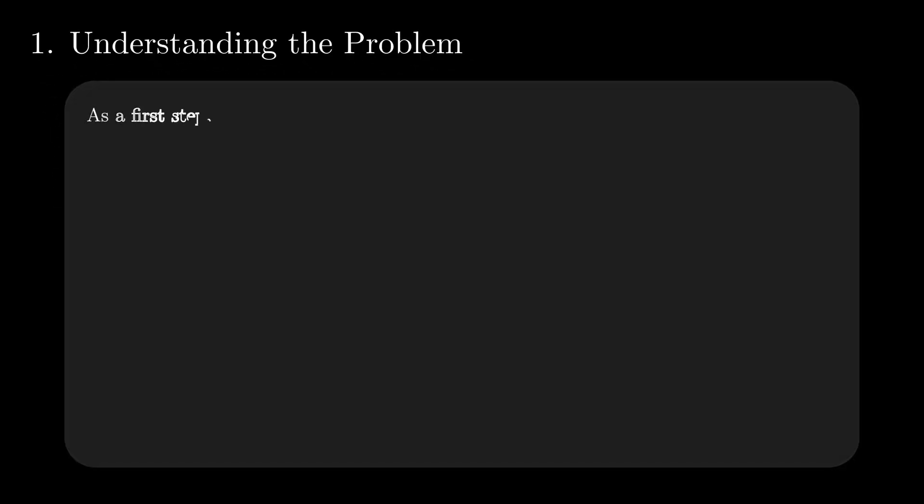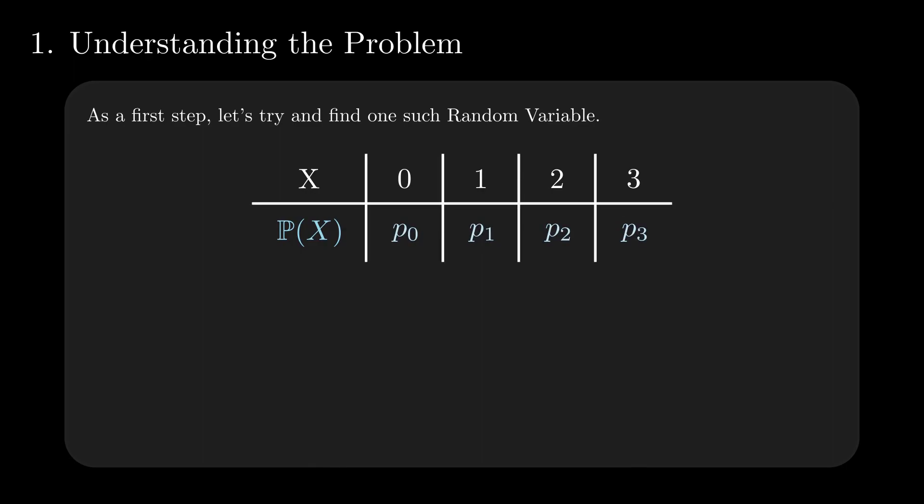We can first find a simple example of a variable that satisfies the conditions in the question. To reduce the complexity of the problem, let's search for a variable that takes only four values: 0, 1, 2, and 3.